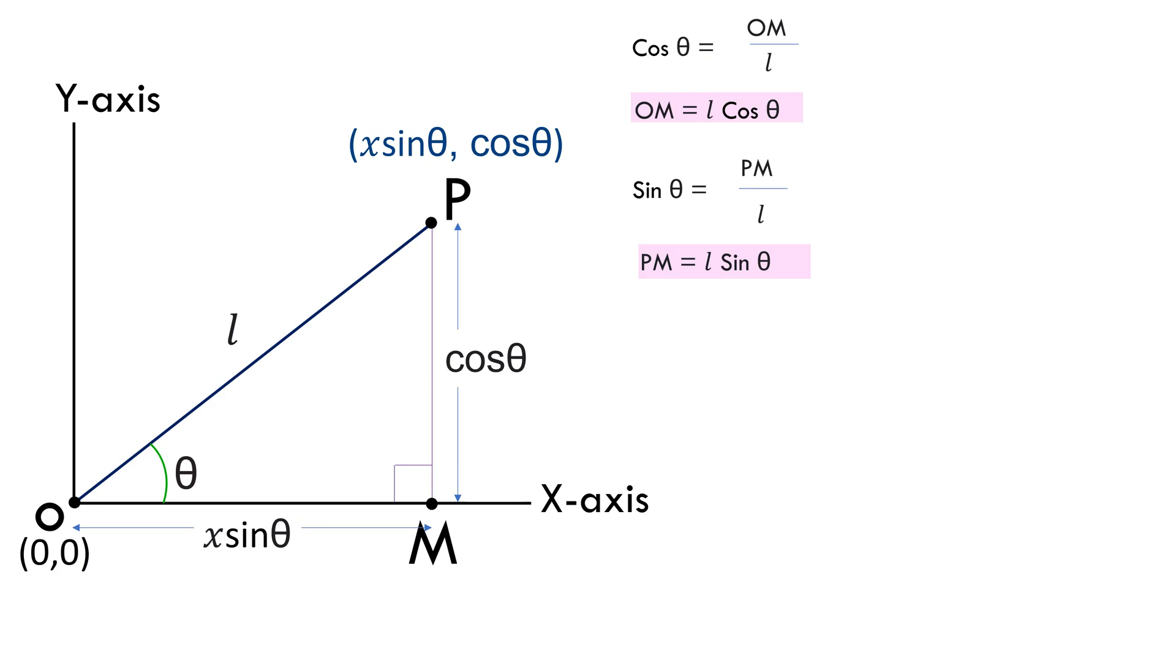Let's equate both the values of OM and that gives us x sin theta equals to l cos theta. Or sin theta by cos theta equals to l by x. Or tan theta equals to l by x. Let this be equation 1.